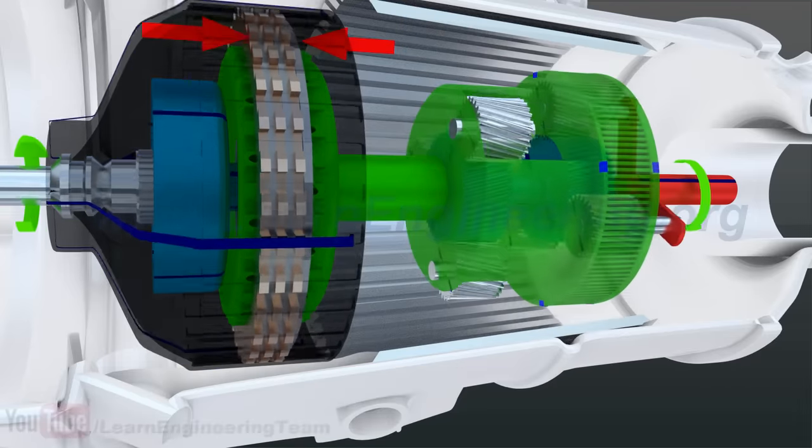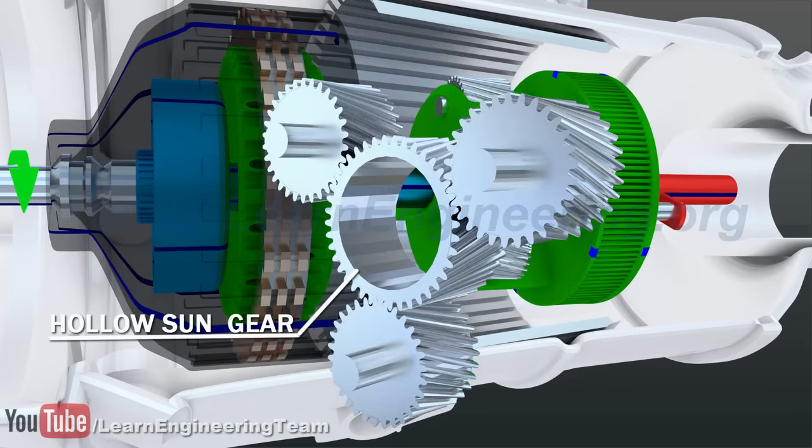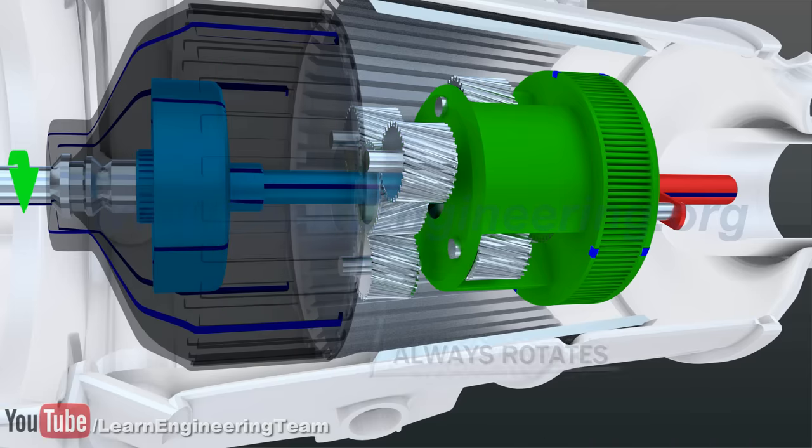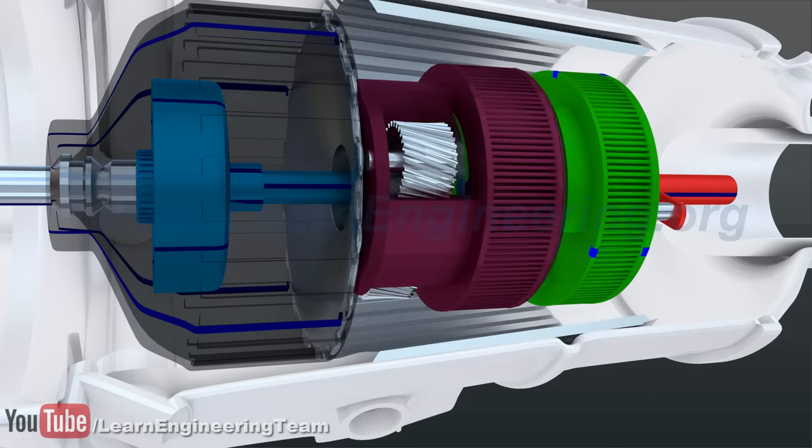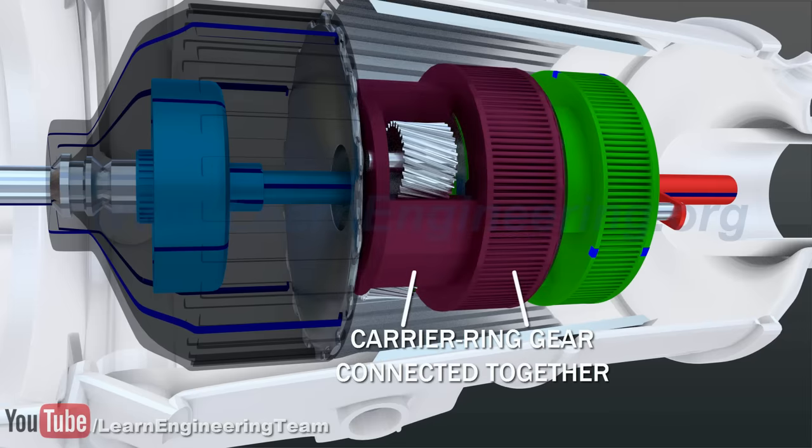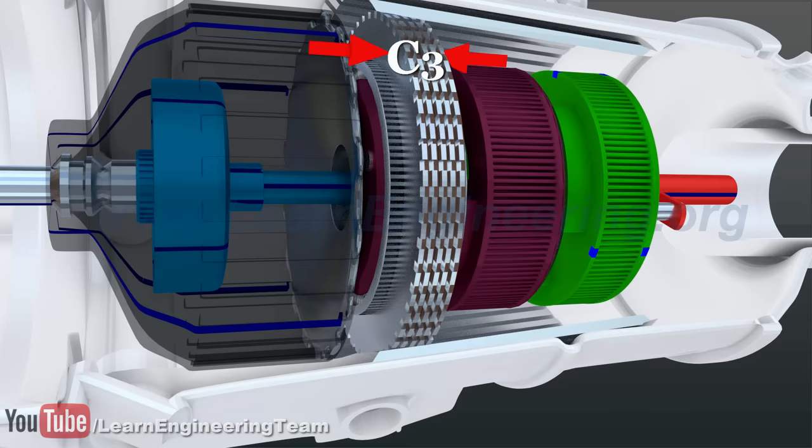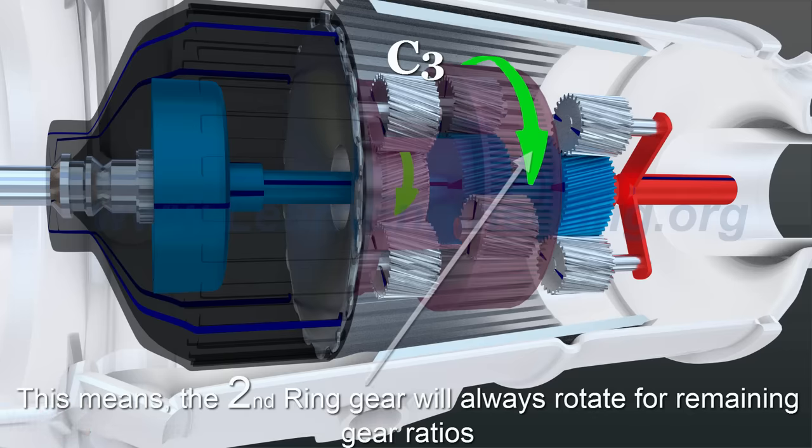A third planetary gear set is required to get the remaining gear ratios. The sun gear of this set is always connected to the input shaft as shown here. And here again, the output of the set is connected to the input of the adjacent set. This means that applying C3 will always turn the ring gear of the second set. For the remaining gear ratios, C3 is always applied.